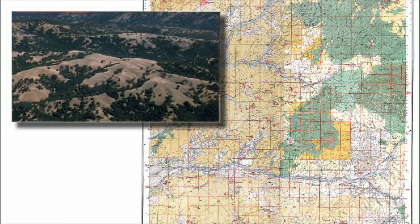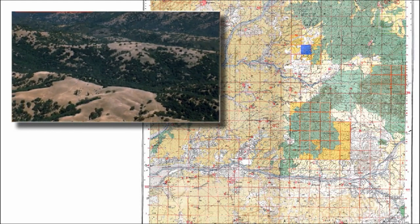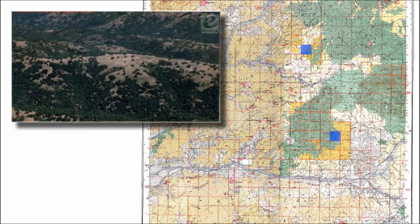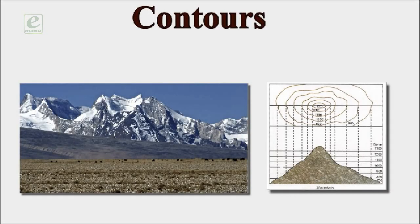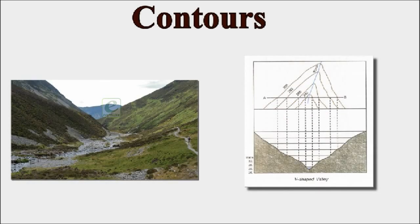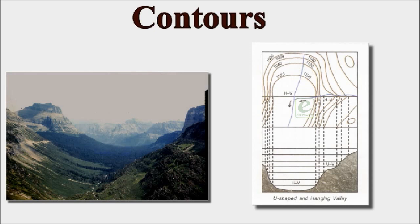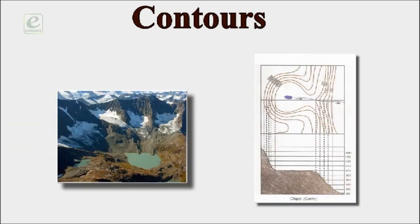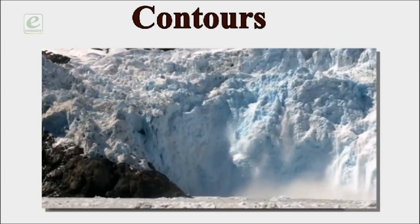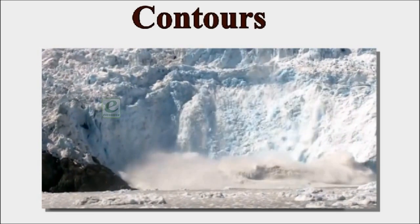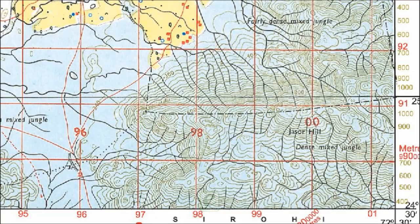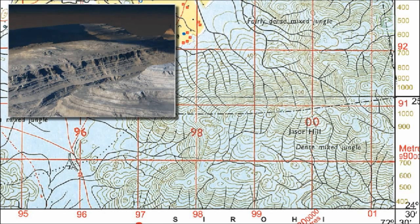These slopes are covered with fairly dense jungles, as in grids 9194 and 9485. Contours show steep slopes, V-shaped valleys, waterfalls, and water divides. The presence of U-shaped valleys, hanging valleys, and creeks suggests that the area has been glaciated. If the value of contours varies from 200 to 1000 meters and they follow an irregular path, then it is a plateau area.